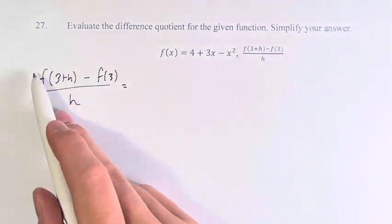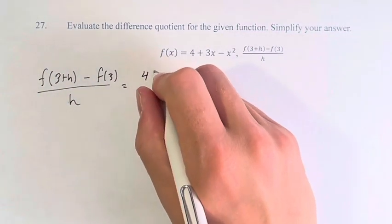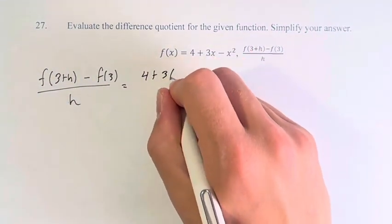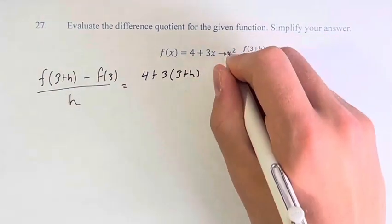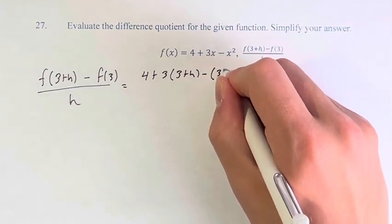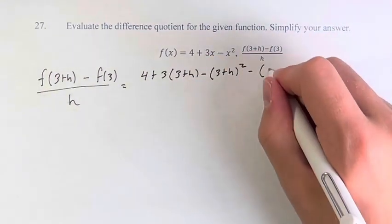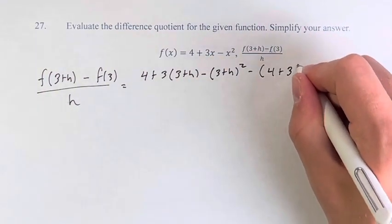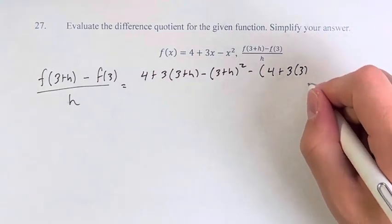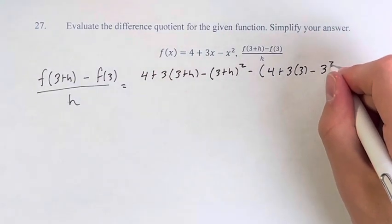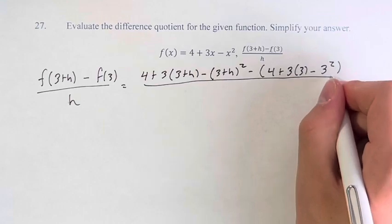So what does this look like? f(3+h): 4 + 3x becomes 3(3+h), minus x² becomes -(3+h)². Minus f(3): 4 + 3x becomes 3(3), so now that's what we're plugging in, minus 3². And this is all divided by h.